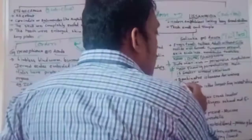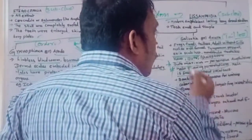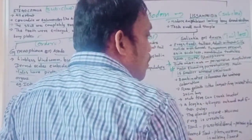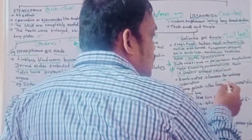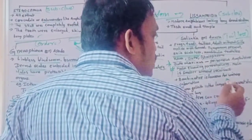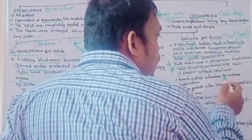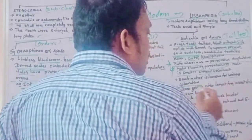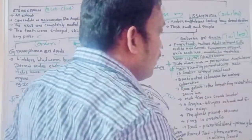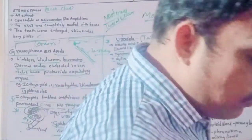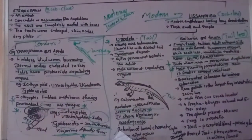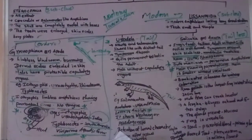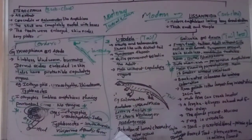Bombinator is famous for warning coloration — it changes its colors to warn predators. These are the information about Salentia or Anura. To summarize: Lissamphibia, which are modern amphibians, are classified into three orders: Gymnophiona/Apoda, Urodela, and Salentia/Anura.